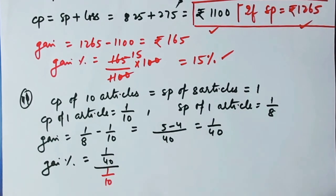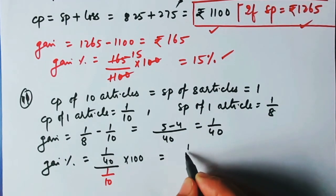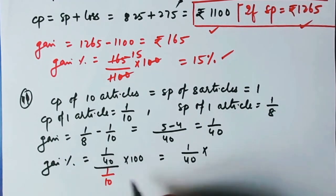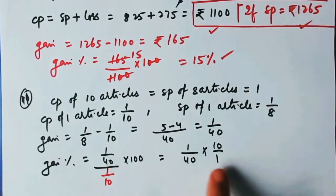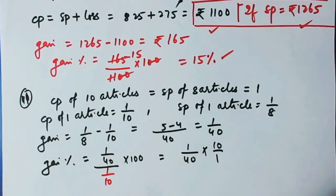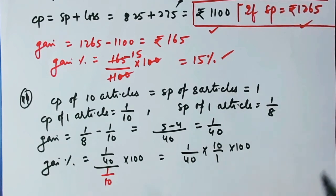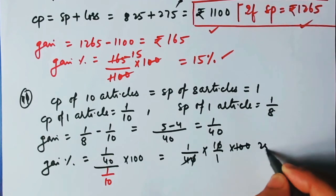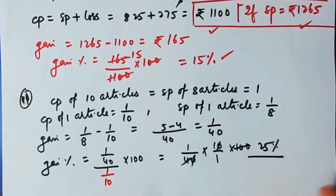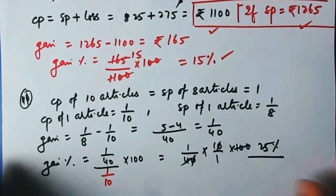Gain% = (gain/CP) × 100 = (1/40)/(1/10) × 100 = (1/40) × (10/1) × 100 = 10/4 × 10 = 25%. So the gain percent is 25%.